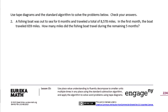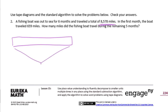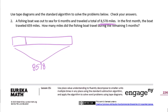Use tape diagrams and the standard algorithm to solve the problems below. Check your answers. A fishing boat was out to sea for 6 months and traveled a total of 8,578 miles. In the first month, the boat traveled 659 miles. How many miles did the fishing boat travel during the remaining 5 months? We'll draw our tape diagram. We know the total was 8,578 miles. The first month it traveled 659 miles, and we want to know about the remaining 5 months. We can find out by subtracting: 8,578 minus 659.